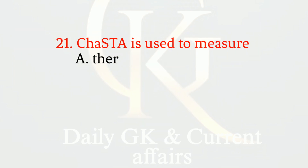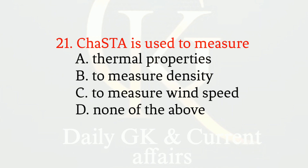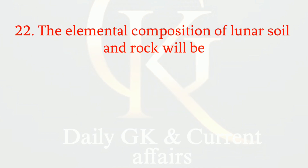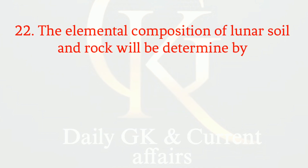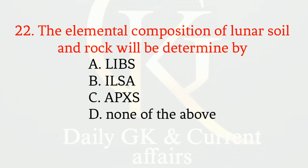ChaSTE is used to measure — the correct option is A: thermal properties. The elemental composition of lunar soil and rock will be determined by — the correct option is A: LIBS.